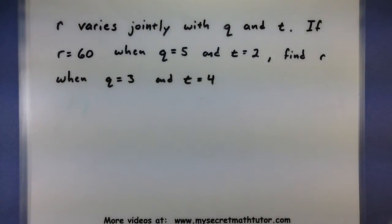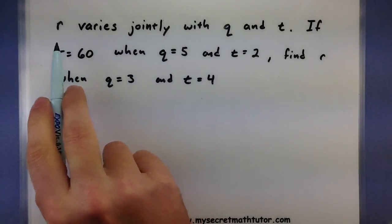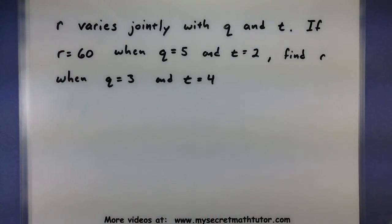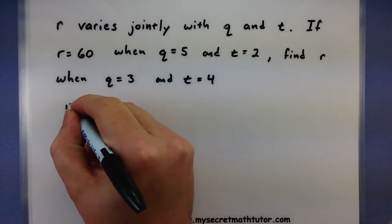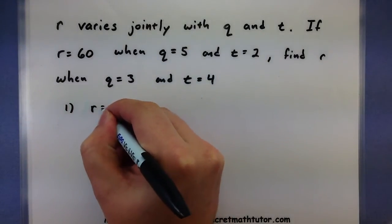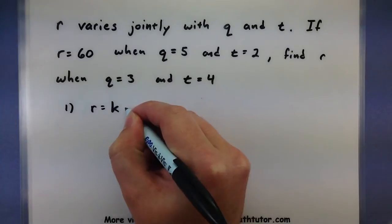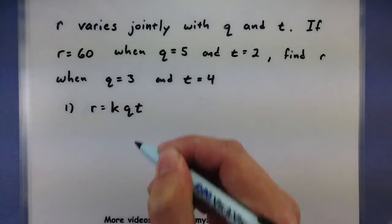In the first example, we have r varies jointly with q and t. If r equals 60 when q equals 5 and t equals 2, find r when q equals 3 and t equals 4. So this one says that r varies jointly with q and t, so we can start with writing the formula. r varies jointly with q and t. Perfect.